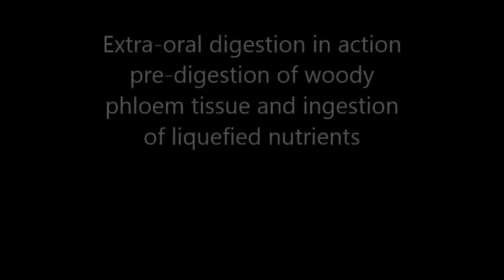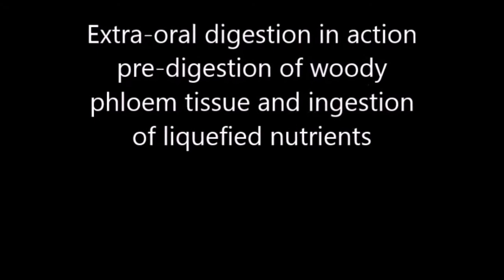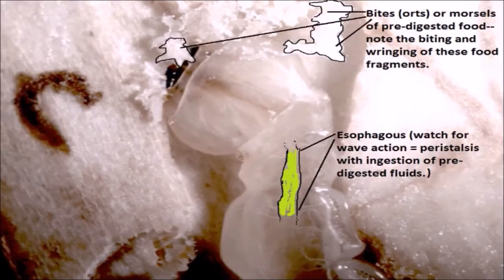You can also see the movements of the spiracles and the muscles that are attached to the body wall. Note the whitish structures in the upper part of the video. Those whitish structures are part of the process of extra-oral digestion where the EAB larva takes some bites of the phloem material, which is very filamentous or elongated cellulose structures. You can see here the bites or mouth parts outlined, and you can also see the outline of the esophagus, which we colored green to make it more visible.